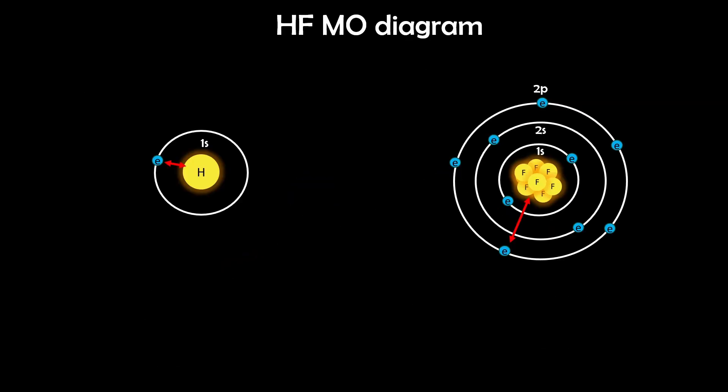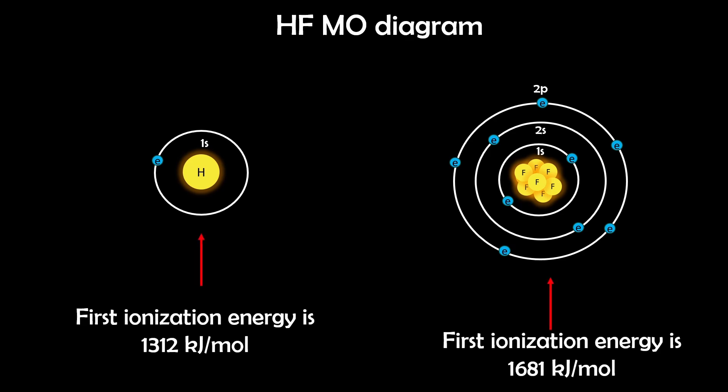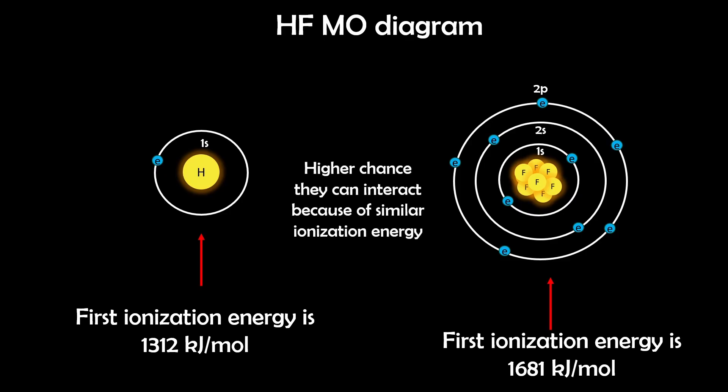The energies are actually close enough to form a bond. Hydrogen has a low effective nuclear charge, so its 1s orbital is relatively high in energy. Fluorine, being more electronegative, pulls its electrons in tighter, so its 2p orbitals are lower in energy relative to hydrogen. You can confirm this by looking at ionization energies — hydrogen has a lower ionization energy, so its orbital is higher; fluorine has a higher ionization energy, so its orbitals are lower. But the key is they are similar enough in energy to overlap. A useful rule: lower ionization energy means higher orbital energy.